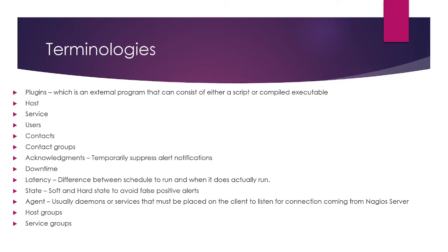Now for terminologies. Plugins are external programs that can consist of either a script or compiled executable. A host is a device or client that you are going to monitor. A service is a metric or check on a host — such as CPU usage, disk usage, or any process — and a host can contain multiple services. Users are those who are going to use Nagios XI. Contacts can be anyone who uses Nagios, and we can group contacts into contact groups.